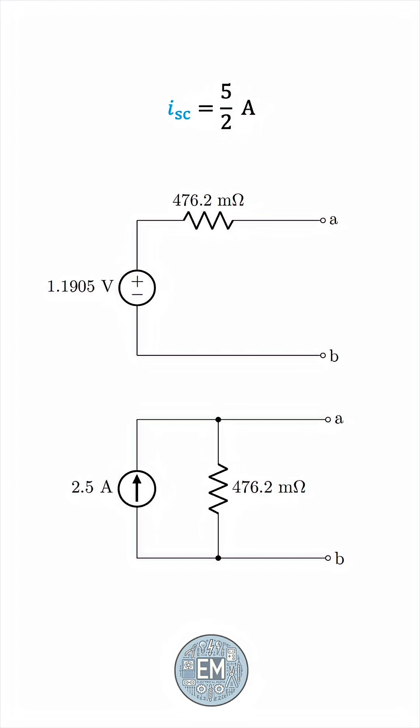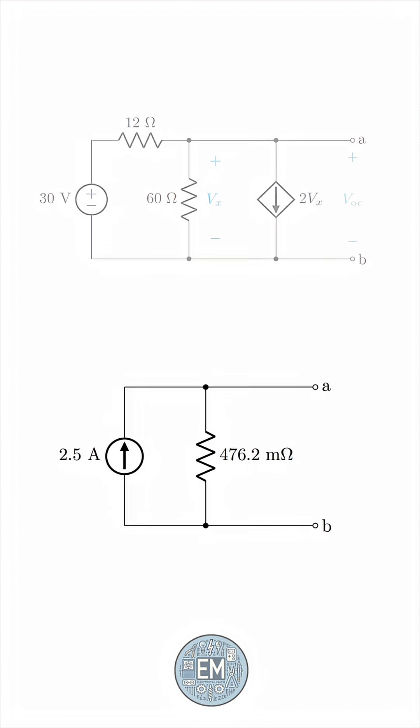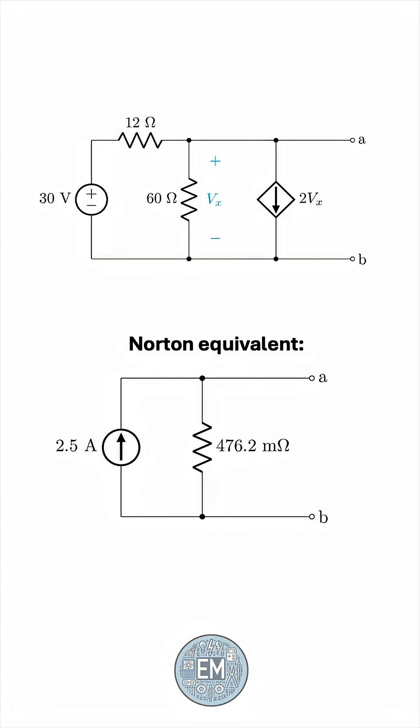The nice thing to note is that the Norton current is precisely the short-circuit current we found earlier. The question wants the Norton equivalent, so that'll be our final answer. This is the Norton equivalent of the original circuit we started with.